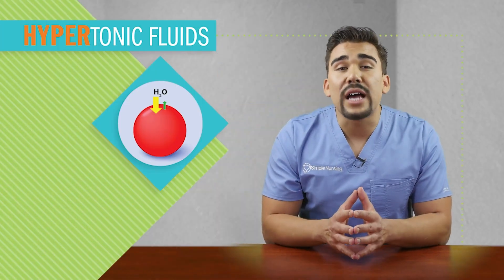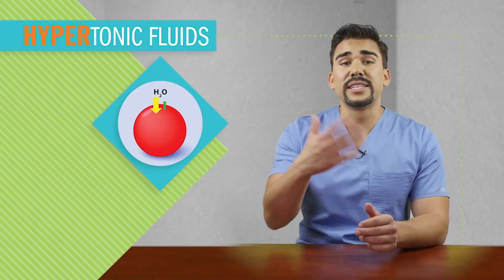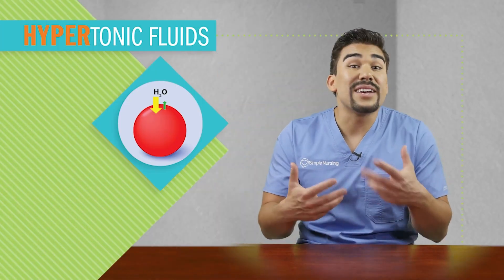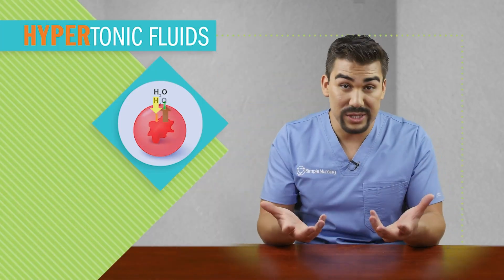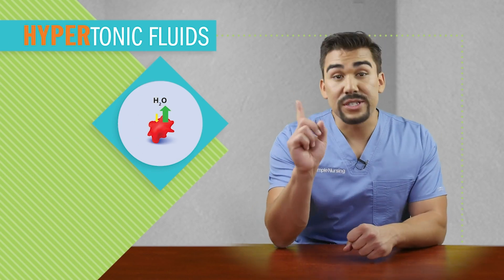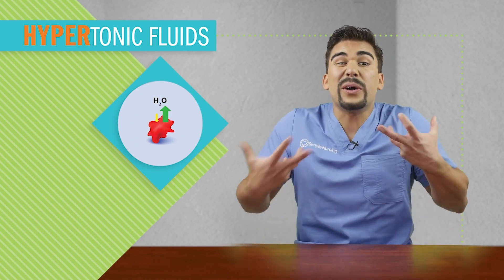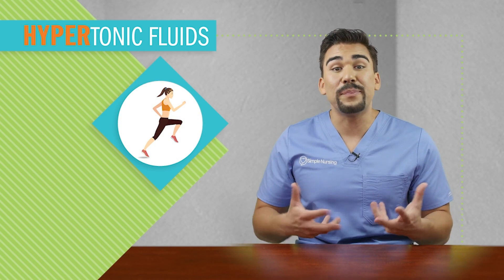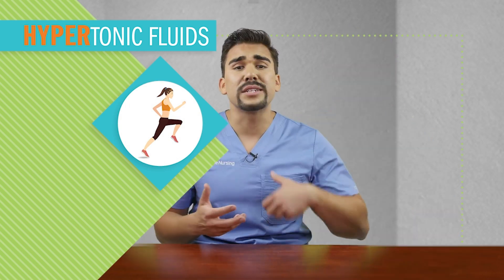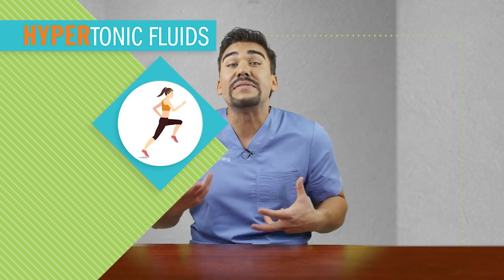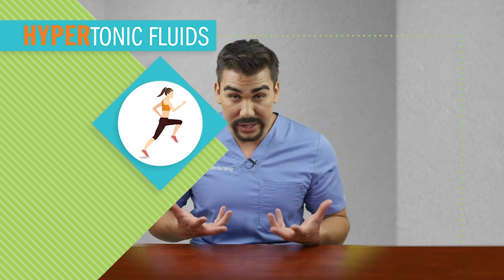Next is our hypertonic fluid. The simplest way to remember this is to think of a hyper person — super high energy, super hyper, always peppy, bouncing off the walls, and super skinny — because you have all that fluid escaping from inside the cell to outside, making those cells skinny and flat.